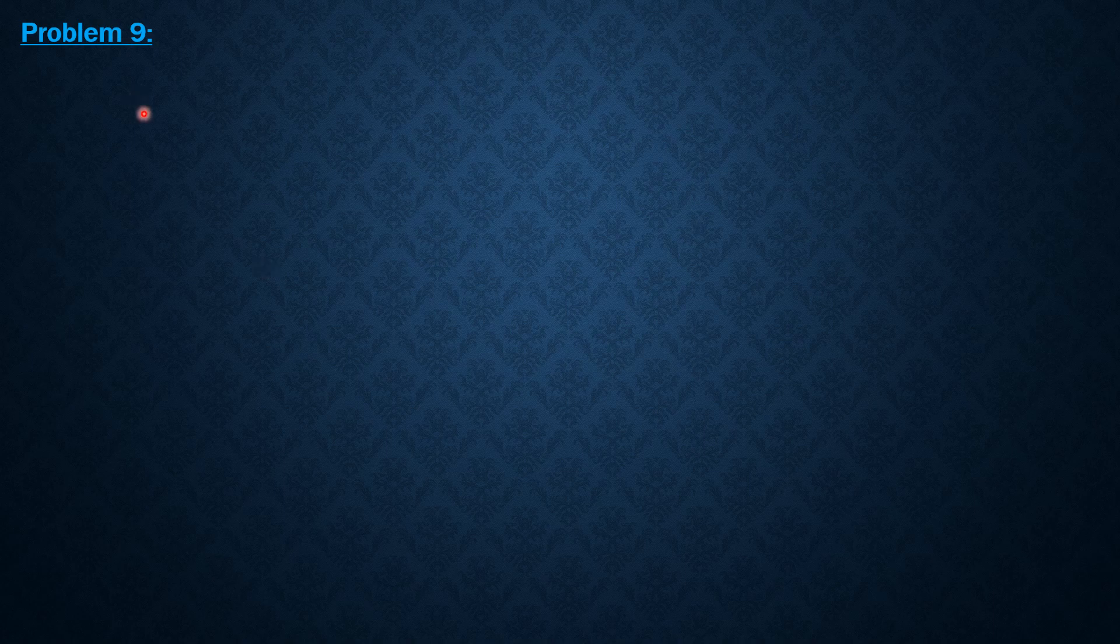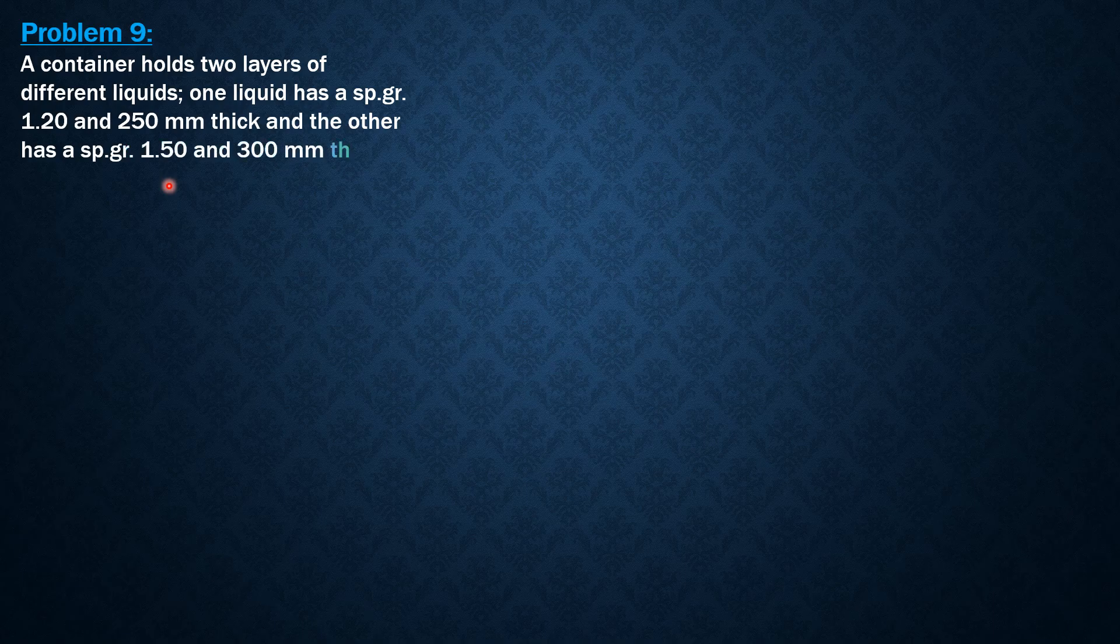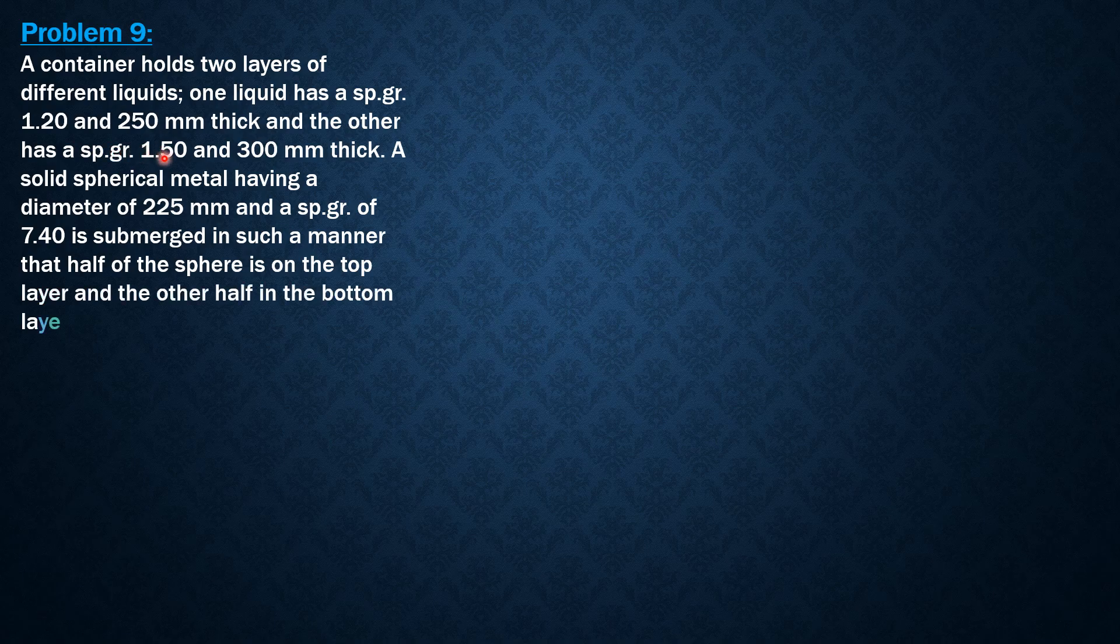Hello everyone, this video presents the solution to example 9 on buoyancy. Here is the problem: a container holds two layers of different liquids. One liquid has a specific gravity of 1.2 and 250 mm thick, and the other has a specific gravity of 1.5 and 300 mm thick.